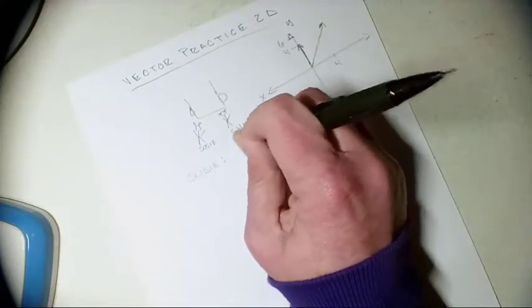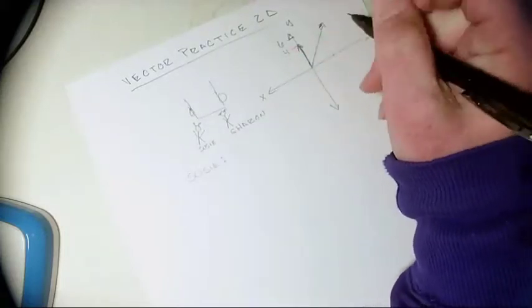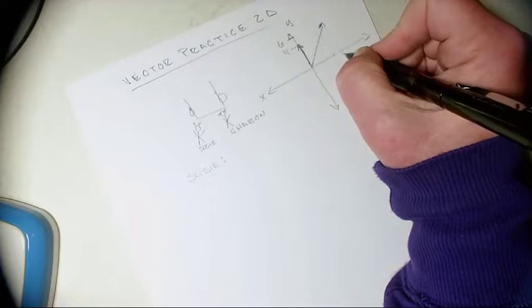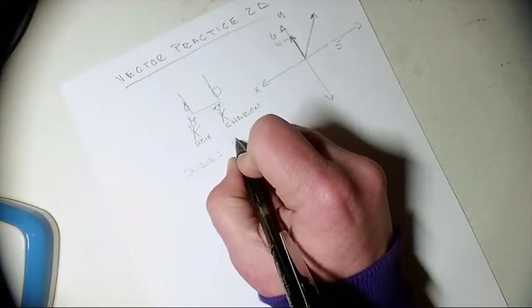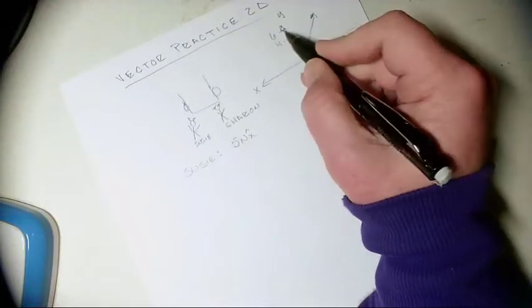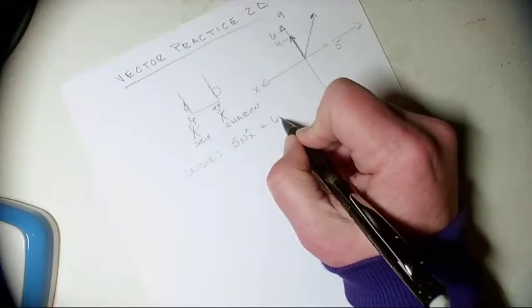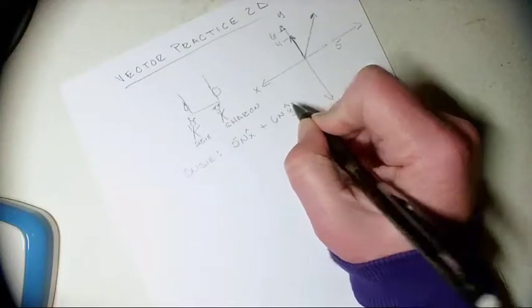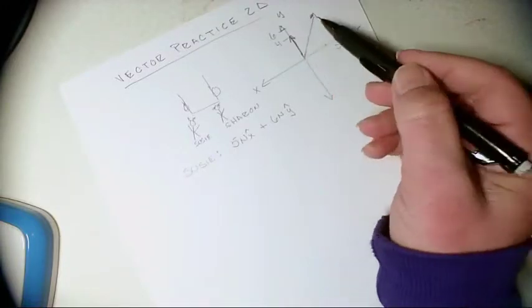Looking at that, I'm realizing my lines don't match, so we'll just call this five. So five, six newtons in the x hat direction and six newtons in the y hat. Now notice nothing's negative because everything is in the first quadrant, so we're good there.